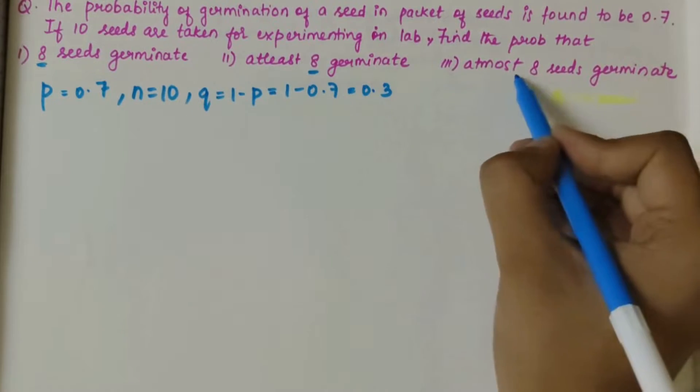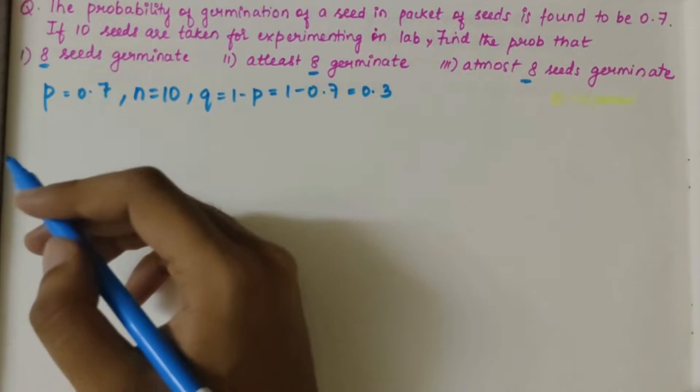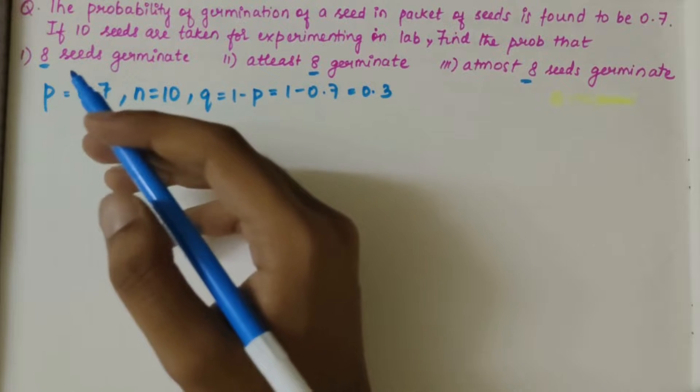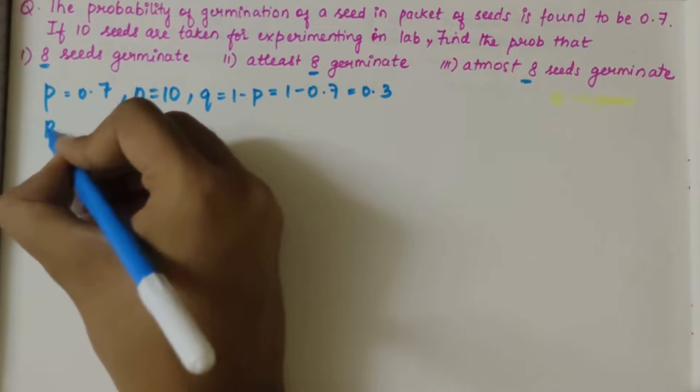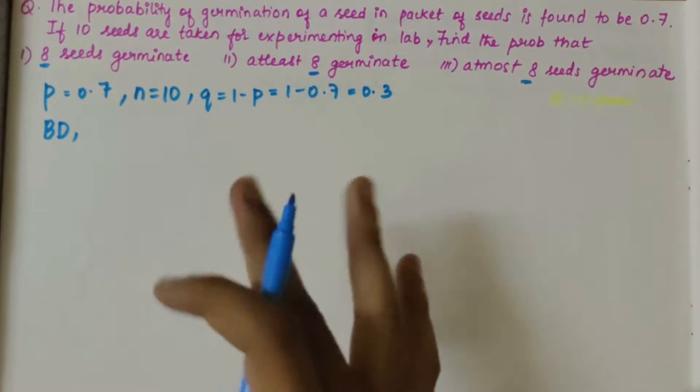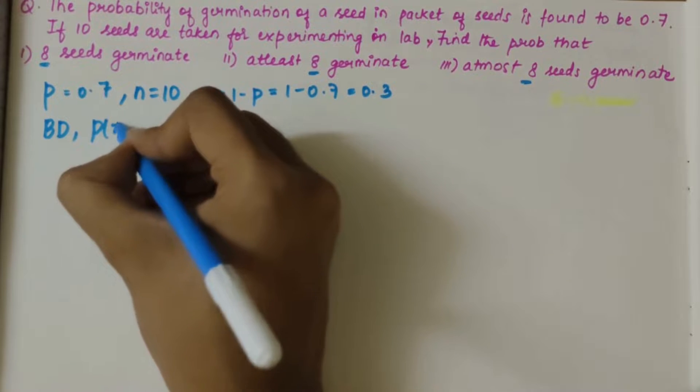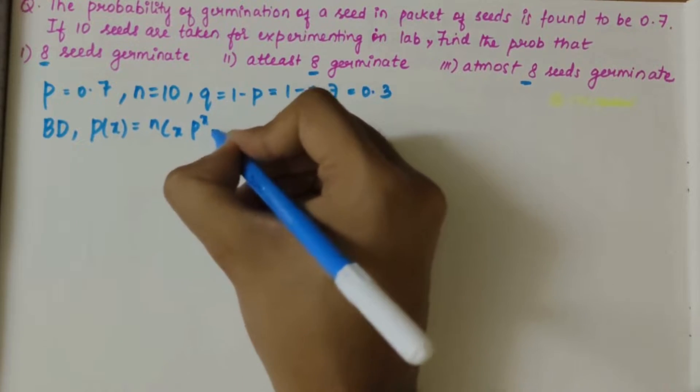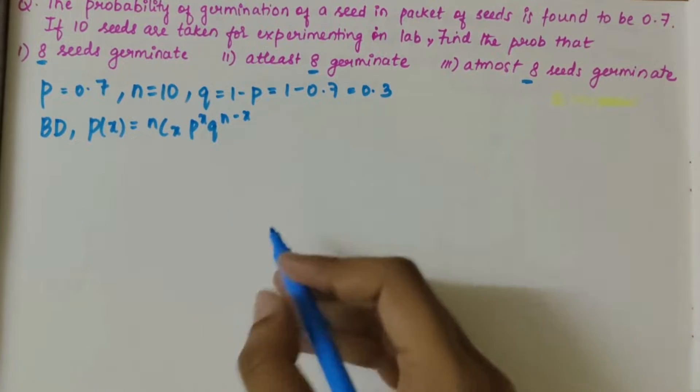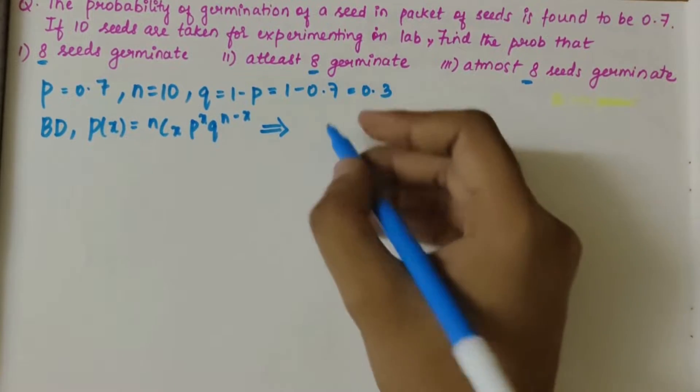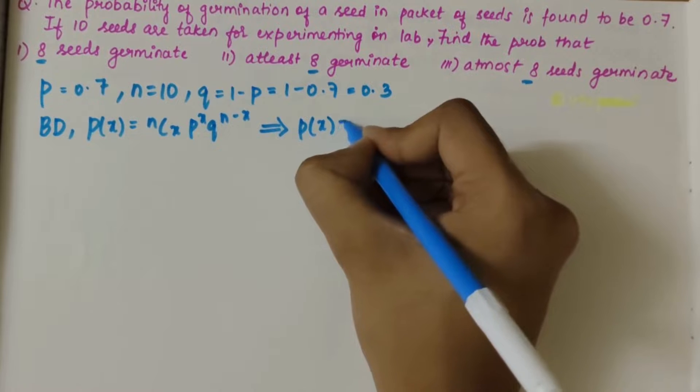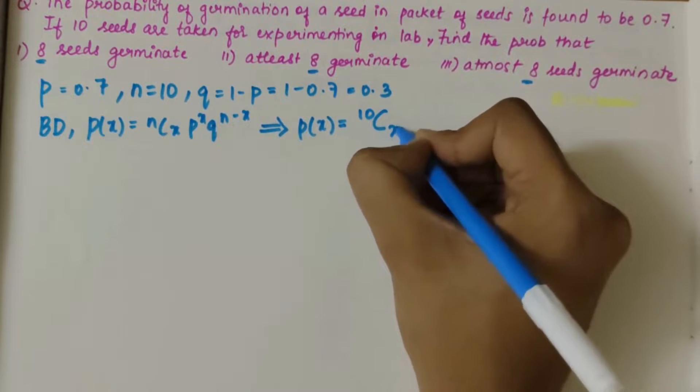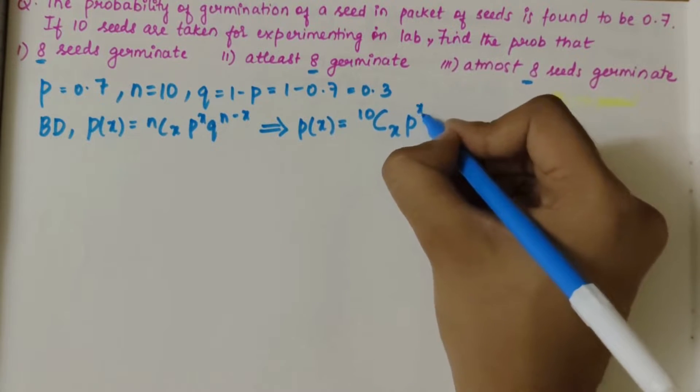Let x be the number of seeds germinating. Now, by binomial distribution, you have to write the formula first: that is nCx p^x q^(n-x), which can be rewritten as p(x) = nCx p^x q^(n-x).